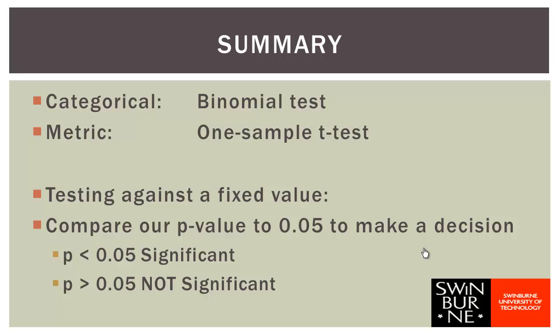In summary, a binomial test is appropriate when you've got categorical data and you're comparing a sample proportion to some reference or test proportion. The one-sample t-test is relevant when you've got metric data and you're comparing a sample mean to some reference or test mean. With both tests, you're testing against a fixed known value. When you do any significance test, you compare your p-value to 0.050: if p < 0.05 the test is significant; if p > 0.05 the test is not significant.